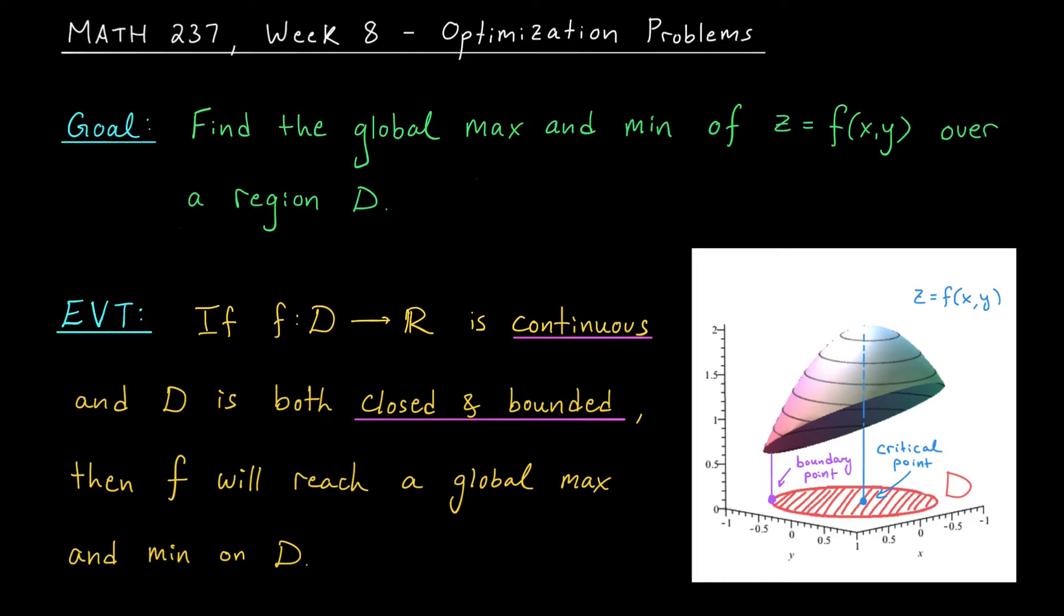In general, these are the only two options for the location of a global max or min, at critical points inside the region or at points along the boundary. Well, last week we spent lots of time talking about how to locate critical points, so I'm not going to focus on that in this video. Instead, I'm going to talk about optimizing over the boundary.